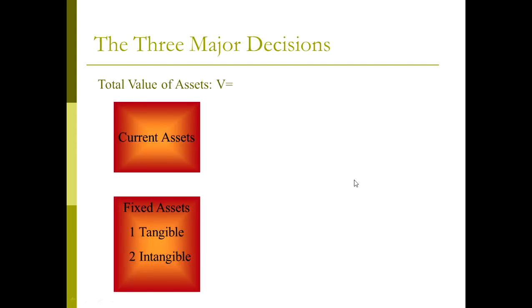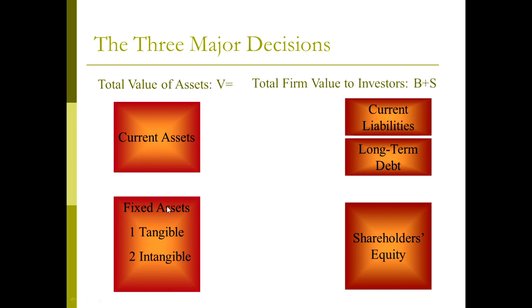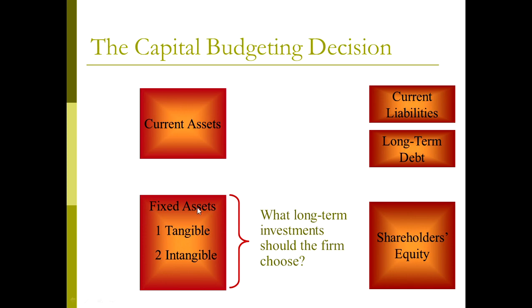The three major decisions can be reflected in the balance sheet. On the left-hand side we have current assets and fixed assets; on the right-hand side we have liabilities and shareholders' equities. The first question is reflected in the fixed asset portion — once you choose a long-term investment, the fixed assets increase. For example, investing in a new computer line means spending money on plants, equipment, and parts, all reflected in fixed assets.